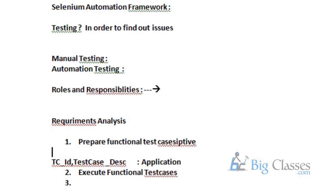In the execution phase, we are executing the test cases and comparing the expected result and actual result. If both are the same, we give the status that the test case is passed. If both are not the same, we give the status that the test case is failed. Whenever the test case is failed, we simply log the bug to the specific developer.